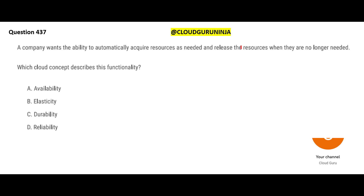This next question: you want to automatically acquire a resource when you need it and release it when you don't. That is called elasticity. Think of politicians who switch parties freely — they can go anywhere they want. Availability means your amazon.com is always available; if it is not available for two hours, you will go to flipkart.com and order there, meaning Amazon loses business for those two hours.